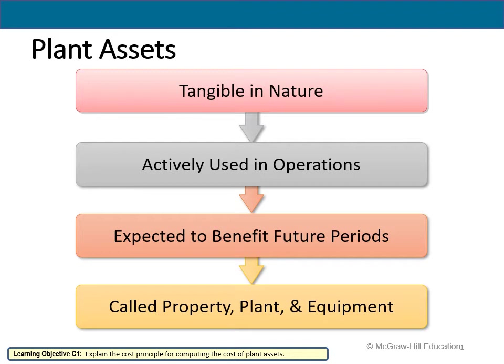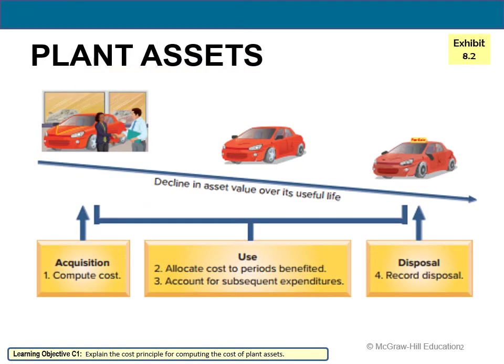We're not talking about supplies, office paper, pens and pencils — things used up relatively quickly. We're talking about things that will last from one period to the next: your furniture, buildings, vehicles, cars, heavy equipment, bulldozers, bobcats — things of that nature. This category is collectively called plant, property, and equipment.